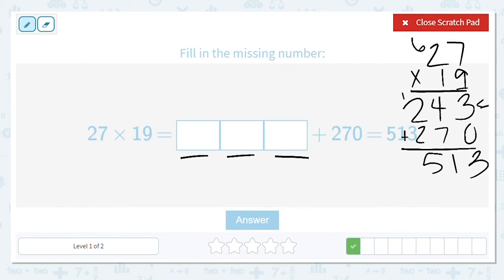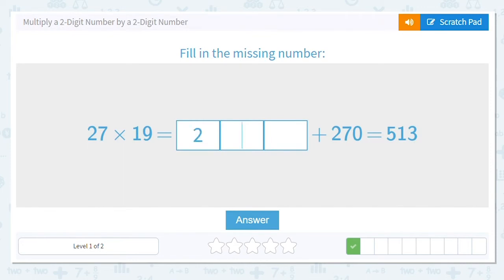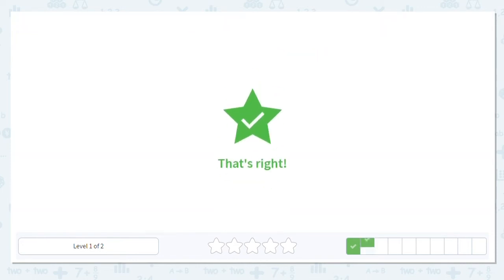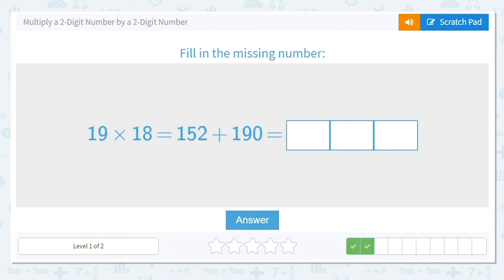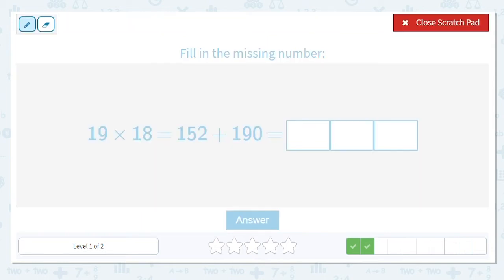Next one, we have 19 times 18 equals 152 plus 90. Well, that's nice. We have our partial products already given to us, so all we need to do is add up our partial products.